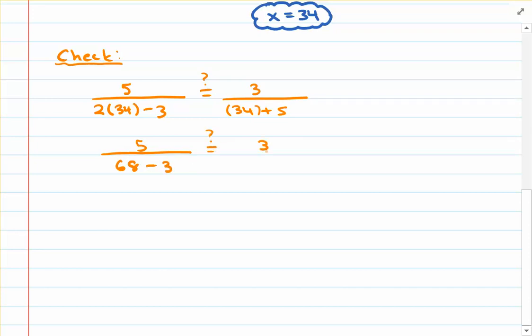On the right-hand side, quicker calculation, 34 plus 5, and that's going to give us 39.